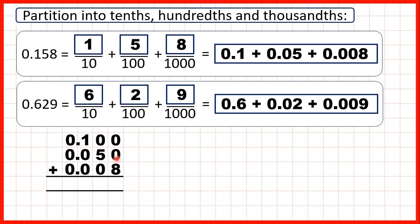All these zeros tell us is that we don't have any extra hundredths or thousandths. We can write a zero in this empty square as well. Now we copy the decimal point down into our answer so that the place values are lined up. Then 0 plus 0 plus 8 is 8, 0 plus 5 plus 0 is 5, 1 plus 0 plus 0 is 1, and 0 plus 0 plus 0 is 0. You can see that when we add the partitioned numbers we get the number that we started with.